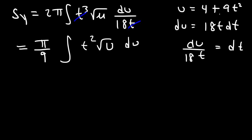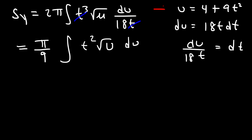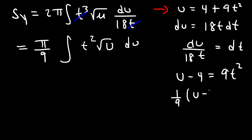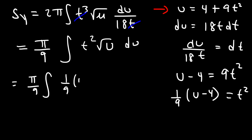So this is what we should have at this moment. We need to isolate t² in this expression. Subtracting both sides by 4: u minus 4 equals 9t². Multiplying both sides by 1/9: t² equals (1/9)(u minus 4). So this is going to be π/9 times the integral of (1/9)(u minus 4) times u to the 1/2 du.